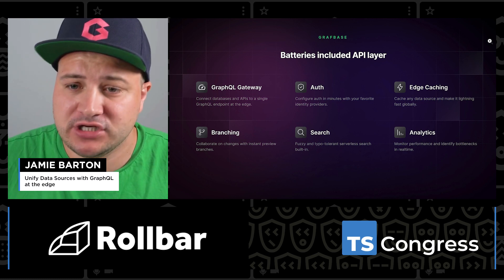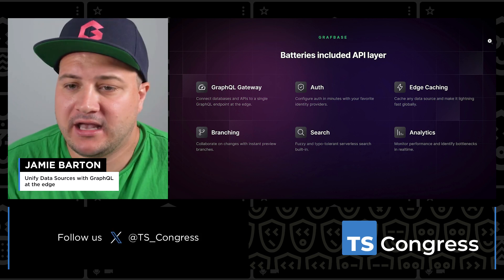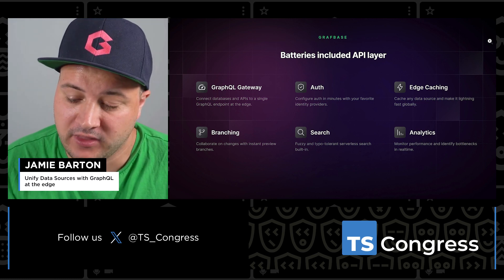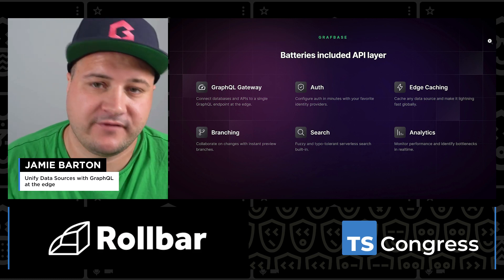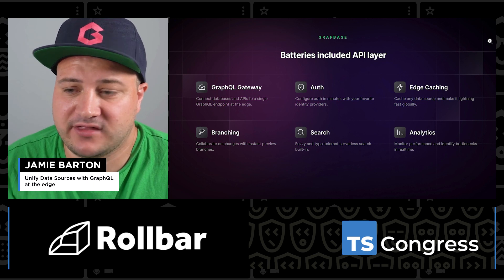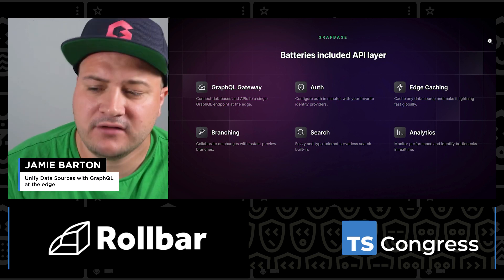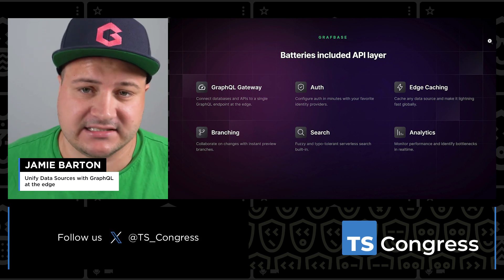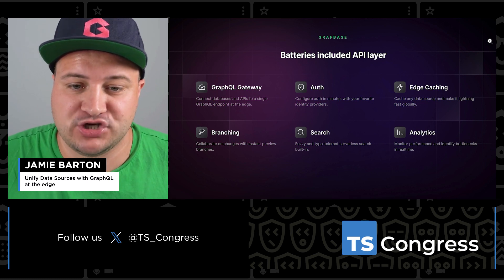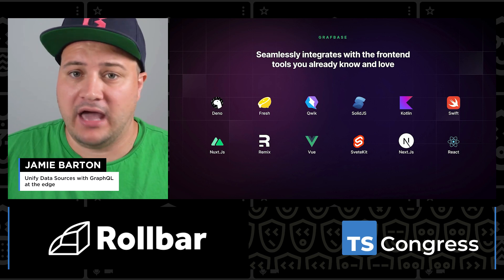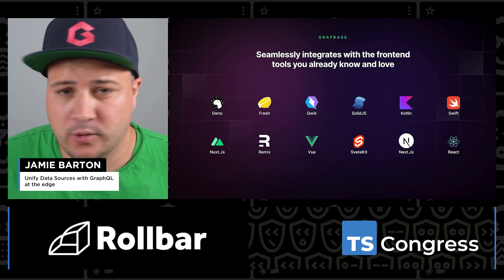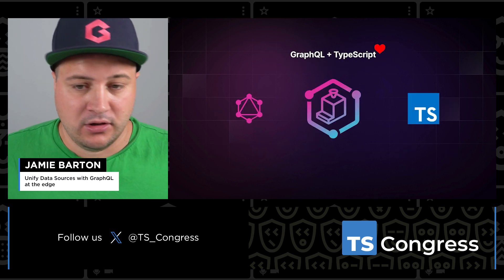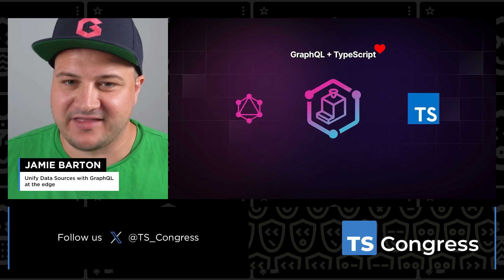When you deploy to production, if you open a branch on GitHub, we'll automatically create a preview URL — just like you're used to with Vercel and Netlify. They give you that immutable URL; we do the same for GraphQL. We'll give you that new API endpoint so you don't have to figure out how to build that yourself — it comes for free out of the box. We also have other products like search and analytics for full insights into your project. GraphQL and TypeScript work very well together because of the type system.